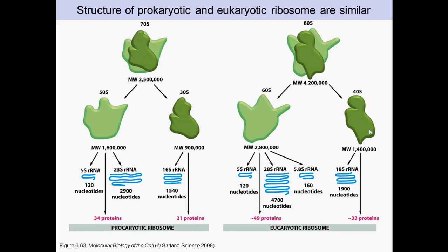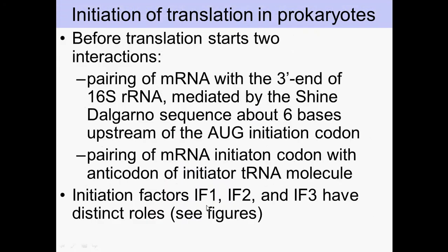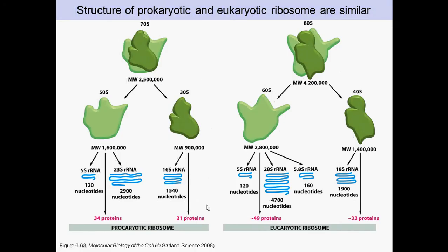For eukaryotes, the important thing to know is that the 23S and 28S ribosomal RNAs are involved in peptide bond formation — they have the enzymatic activity. So 23S in prokaryotes and 28S in eukaryotes are the key ones.